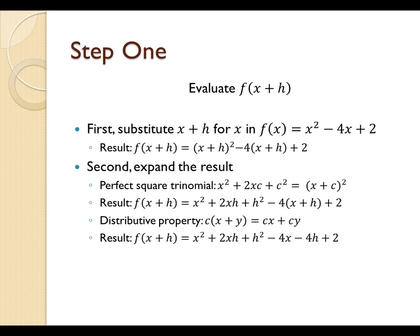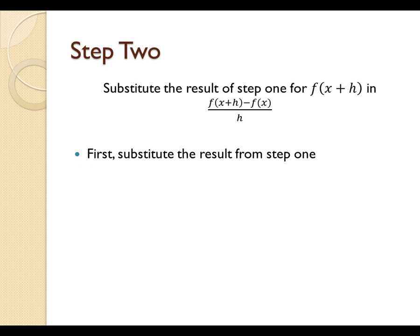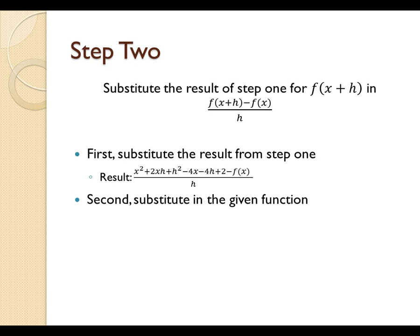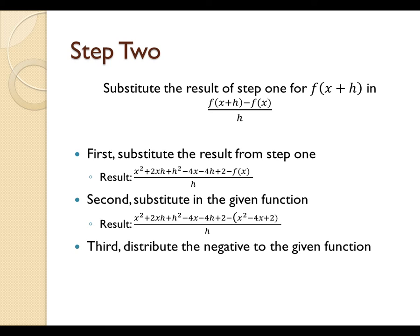Now we're ready to move on to step 2, where we have to substitute the result. So the first thing we're going to do is substitute the result from step 1 into our definition of a difference quotient, which nets us this as the result. The next thing we need to do is substitute in the given function, which will result in this being our result. Now we actually see that there's one thing we can distribute, which is the negative that surrounds the given function. By doing that, we can actually get this as our result.